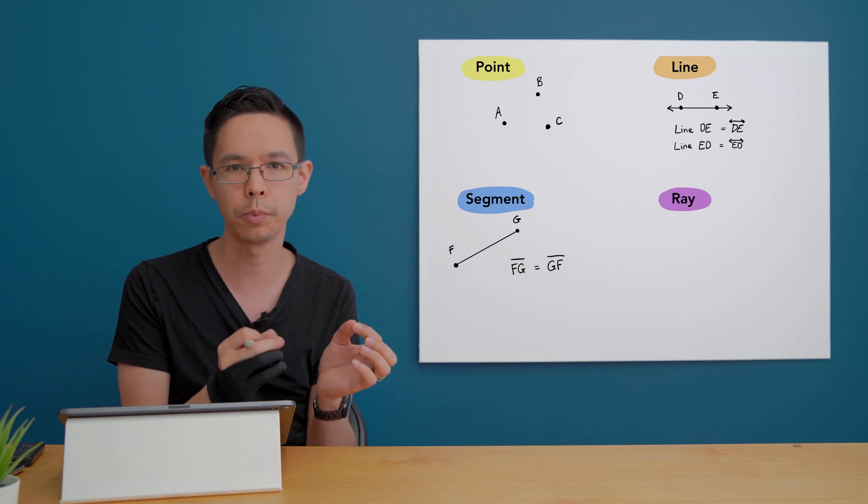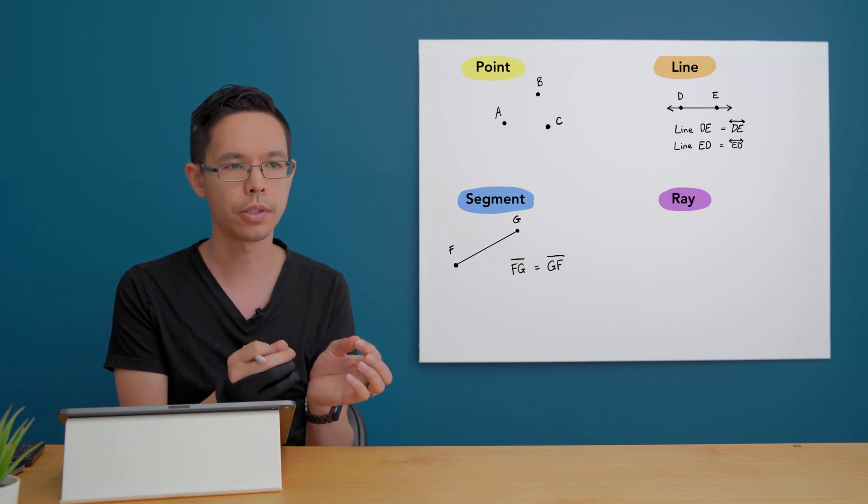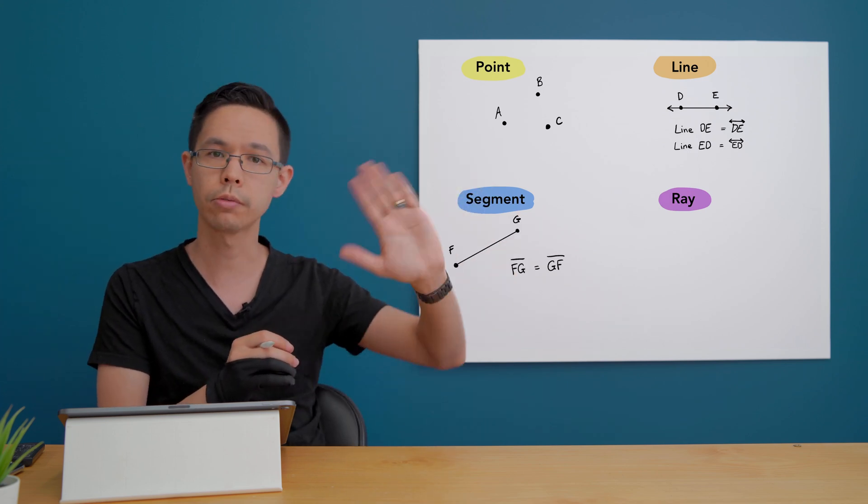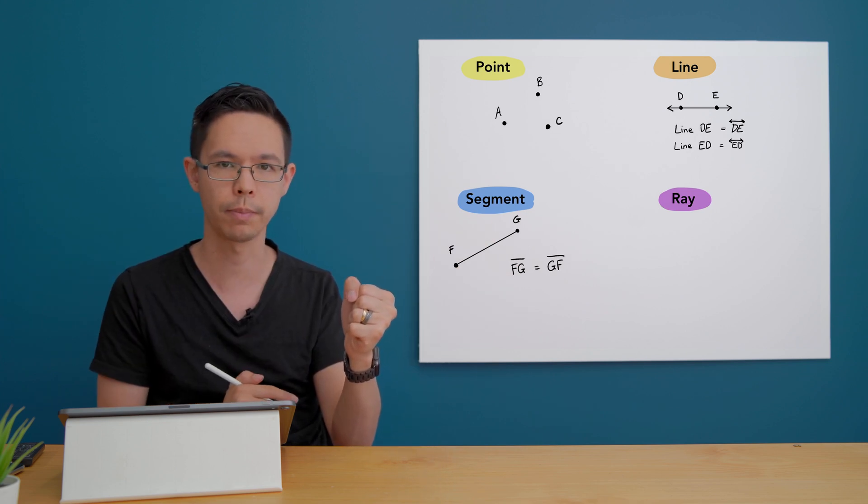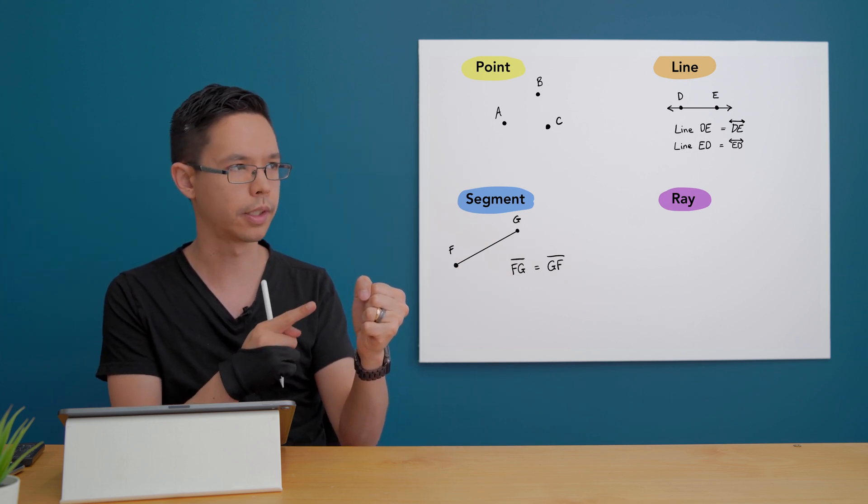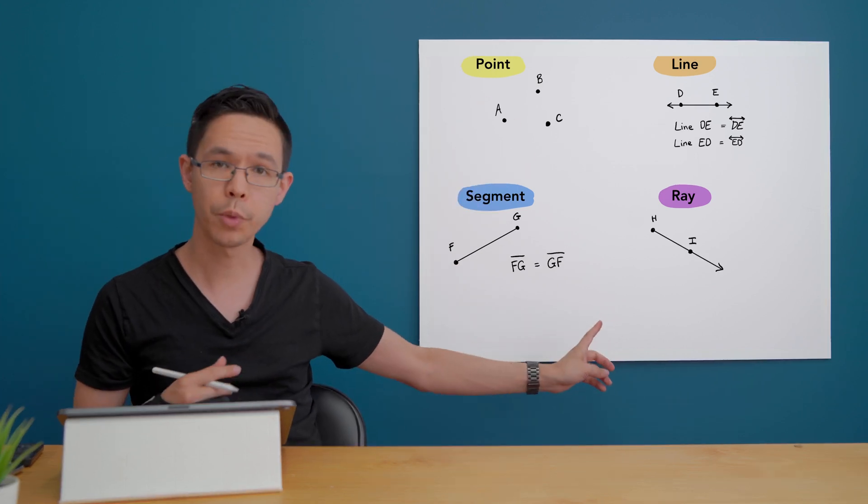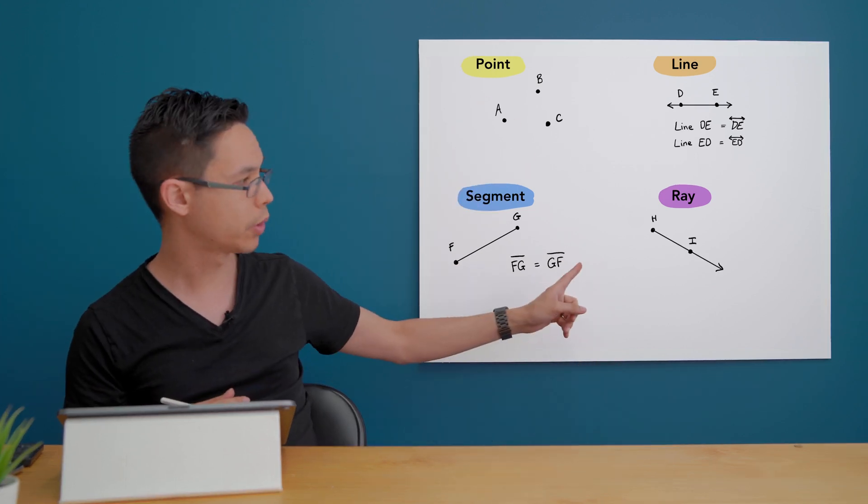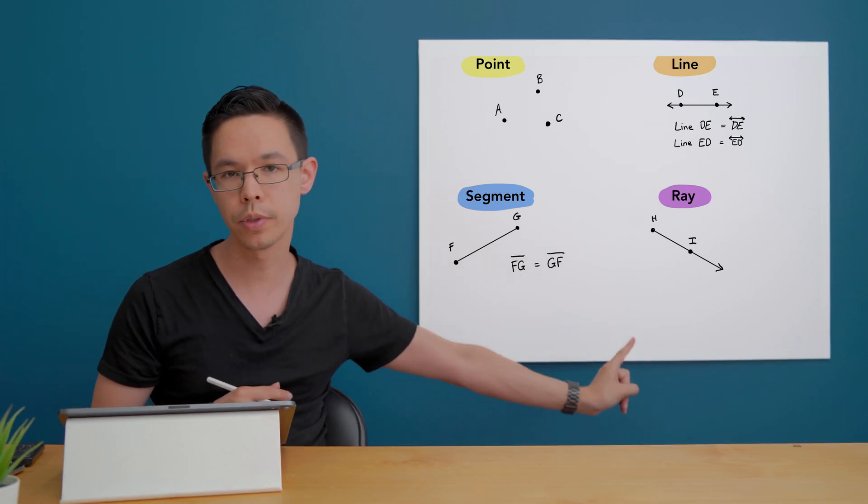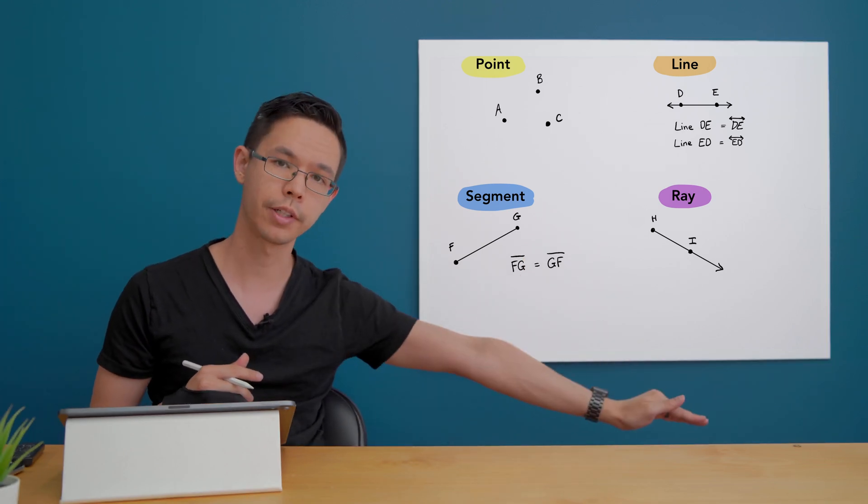We use two points to label this object because we need to know which way this ray is facing. So you can see in the diagram we start from the point H and we run through the point I and extend forever in that direction.